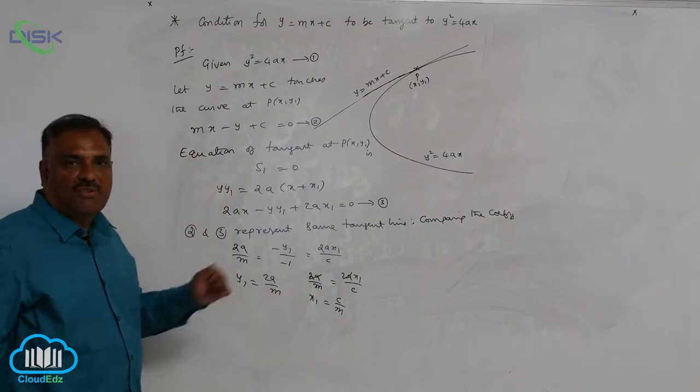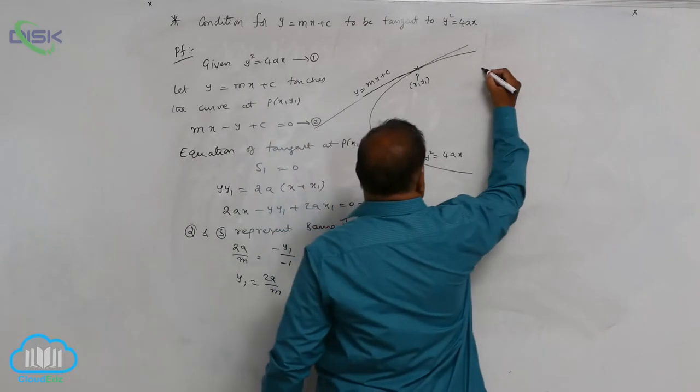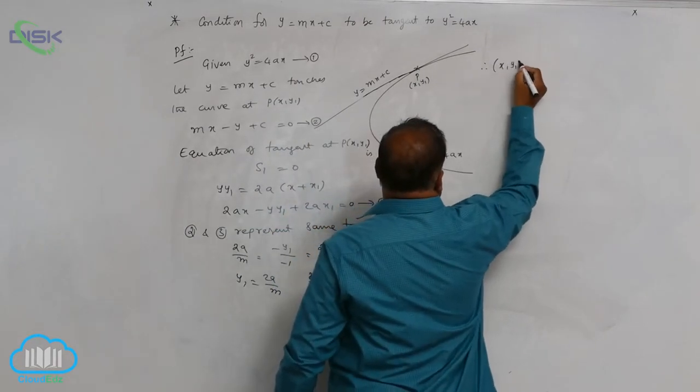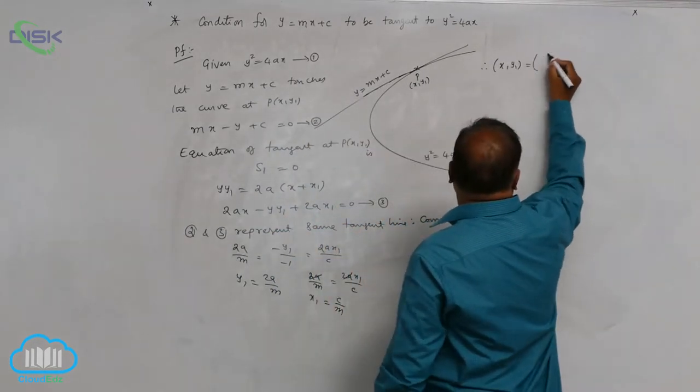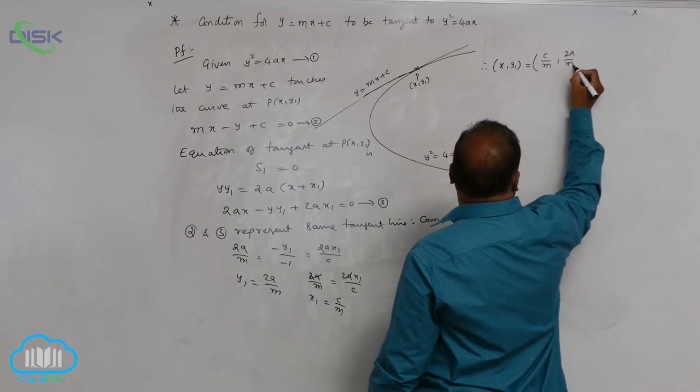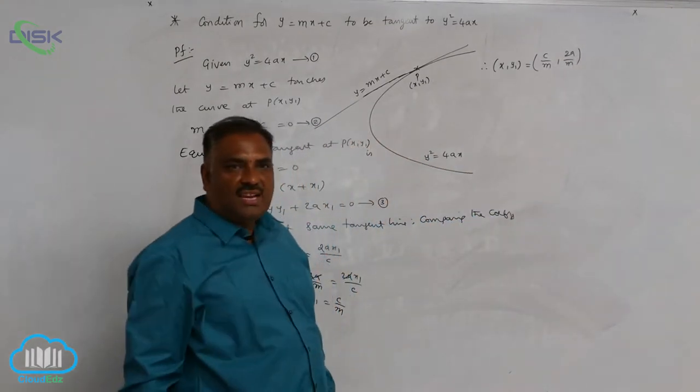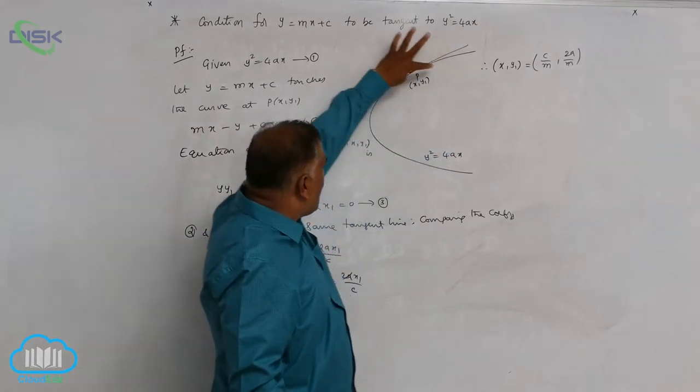Therefore, (x₁, y₁) = (c/m, 2a/m). We can see very clearly this point lies on the parabola.